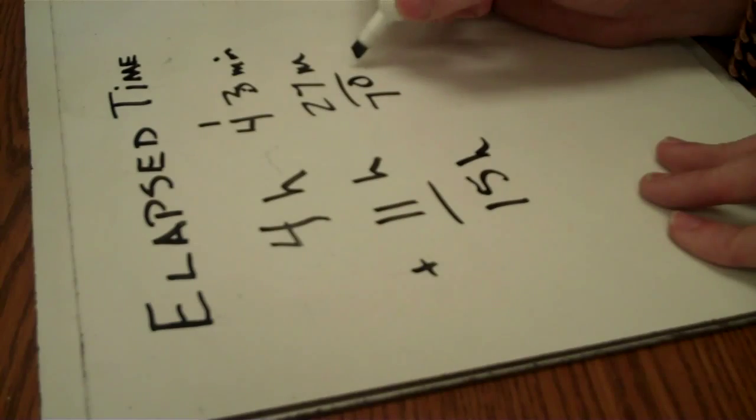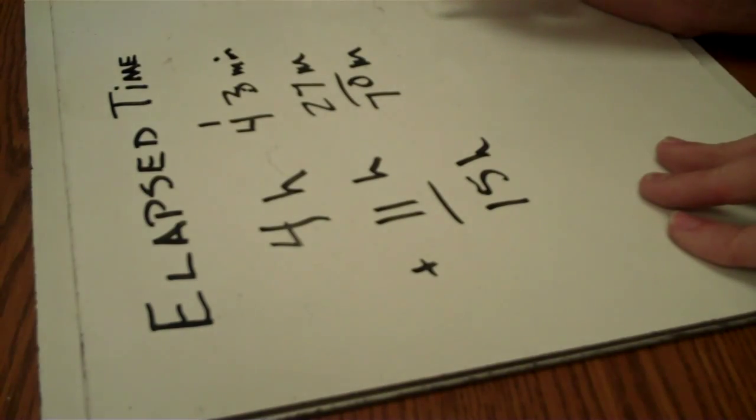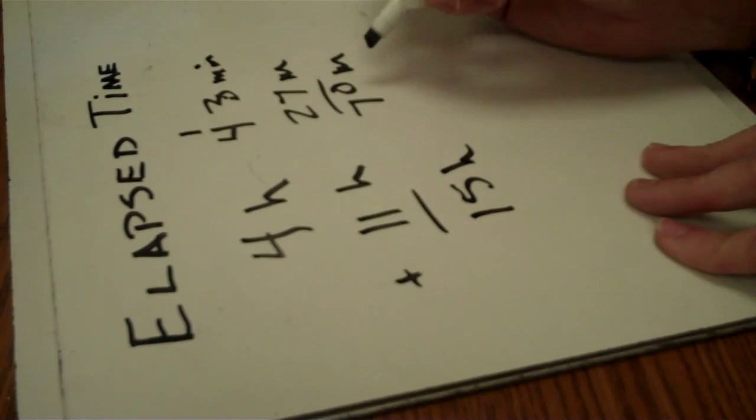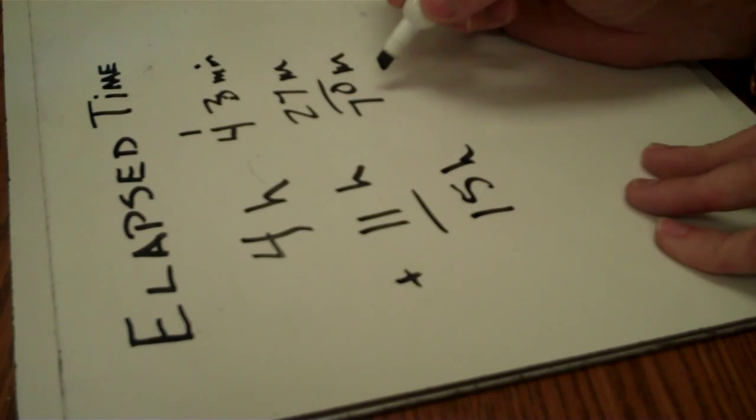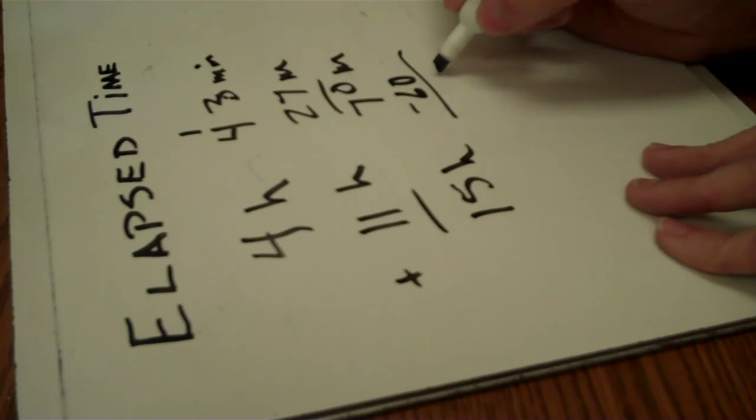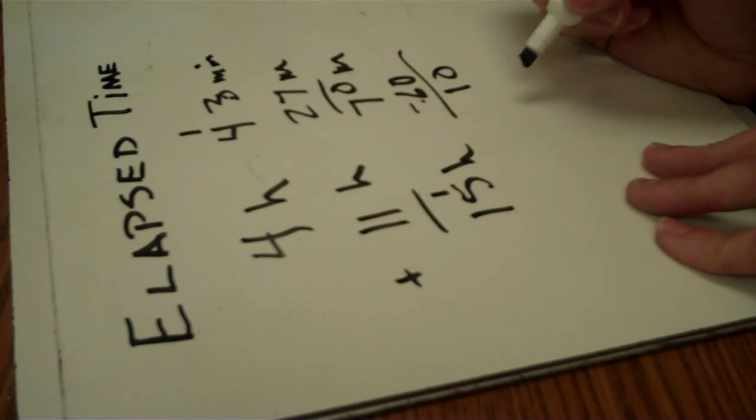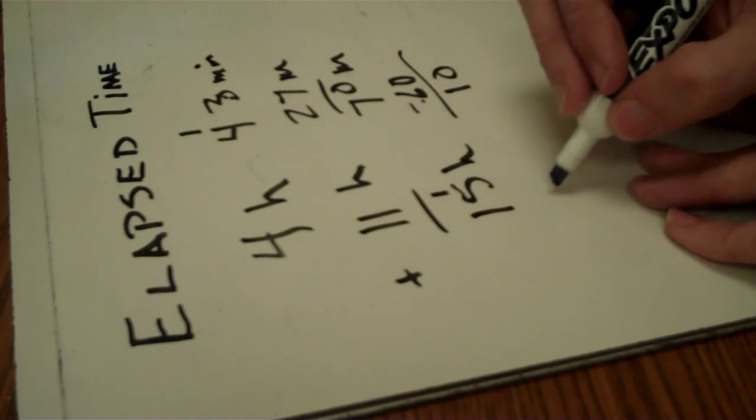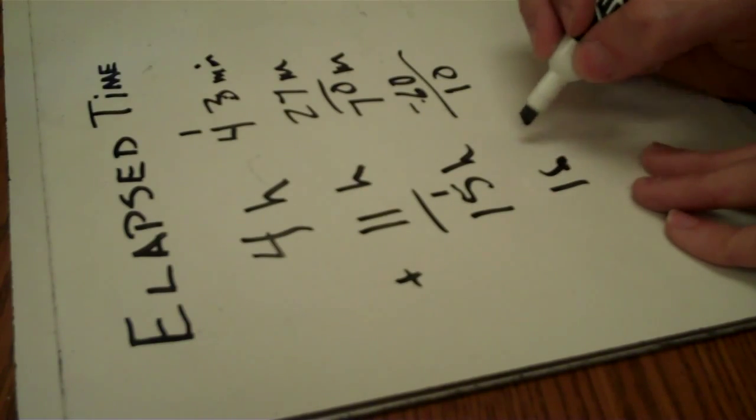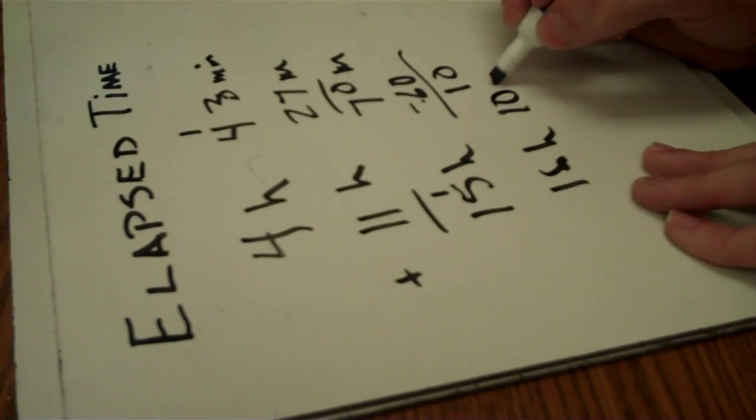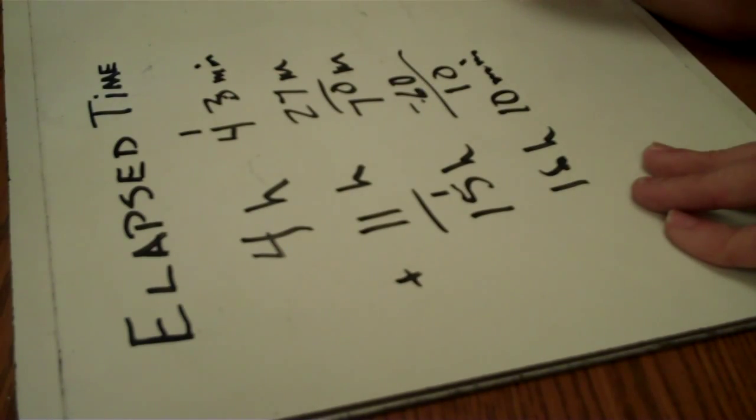15 hours and 70 minutes. The problem with that is there is only 60 minutes in this time frame. So we have to subtract 60 and we end up with 10. And the one that we subtracted, we have to add those 60 minutes, which is 1 hour, to the hour. So we end up with 16 hours, 10 minutes on that one.